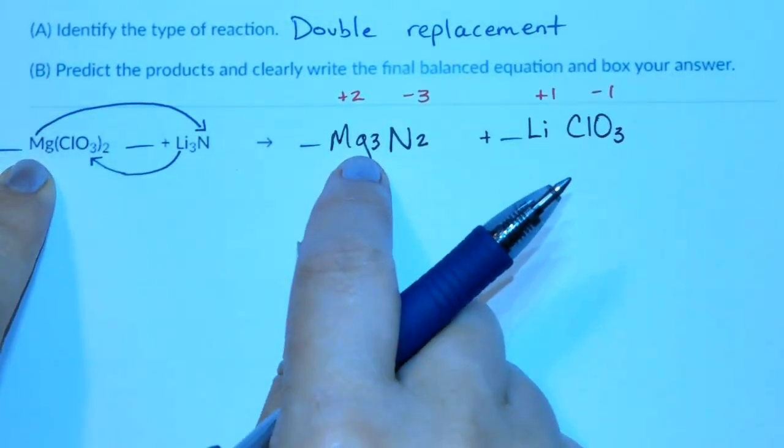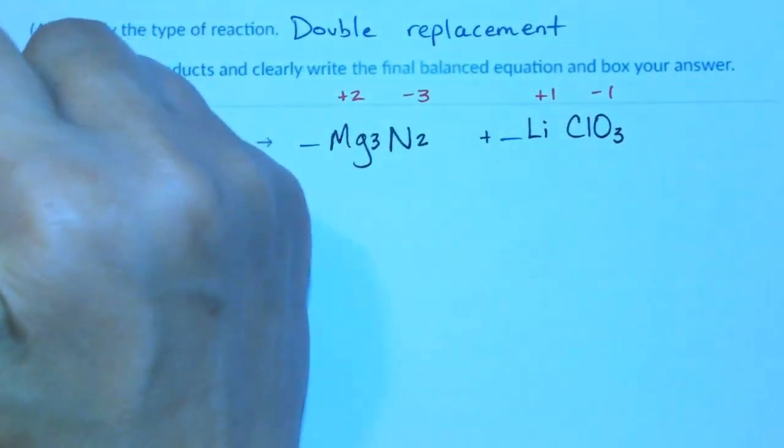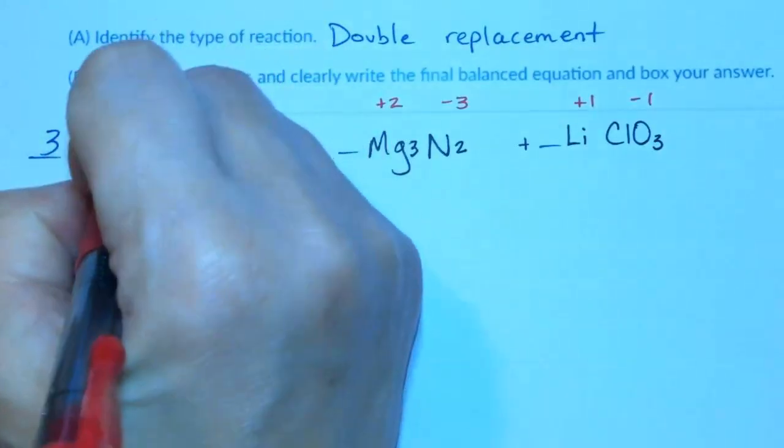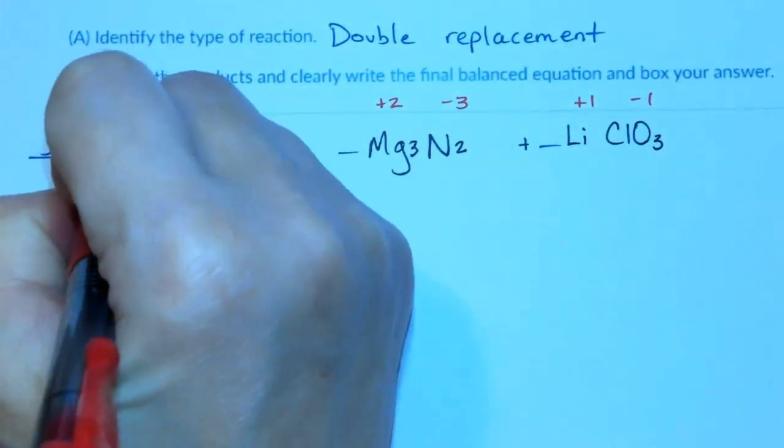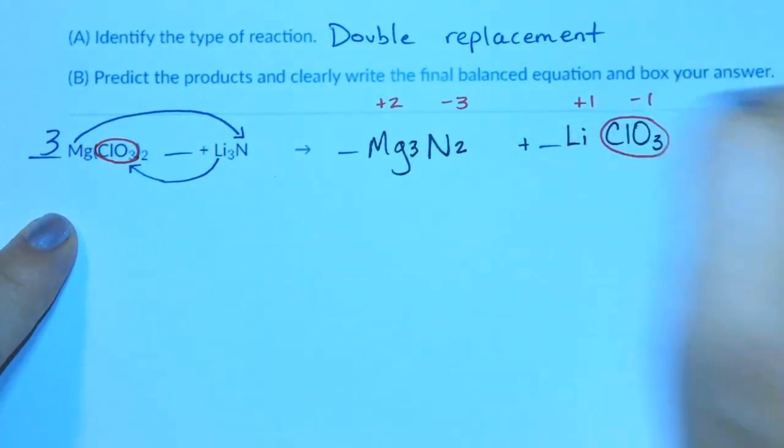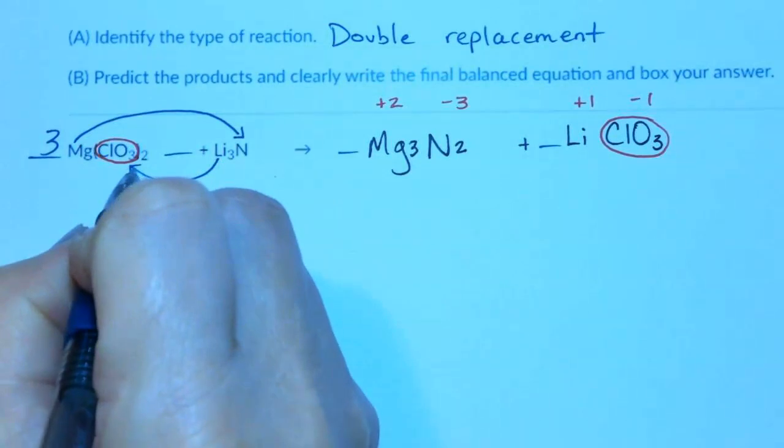1 magnesium, 3 magnesium means I'm going to put a 3 here. And then we're going to balance the chlorates as a bundle. So I'm going to circle ClO3. I'm going to circle ClO3 and treat it as one big bundle. Now, on the left side,